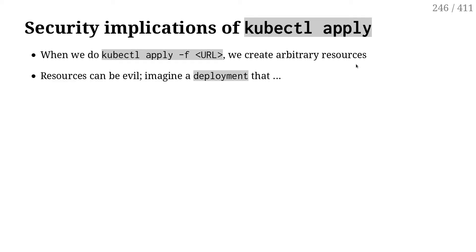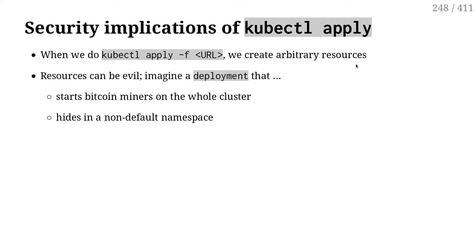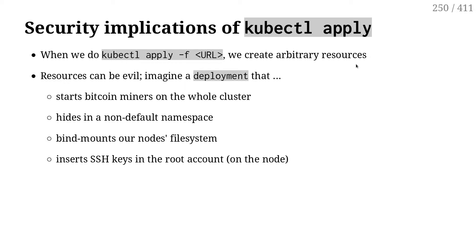So there is a high possibility of danger. When we do kubectl apply, we might end up creating a deployment that would start mining cryptocurrencies on the cluster — that could hide in a different namespace, so that when I do kubectl get, I'm not seeing it by default. It could bind mount the file system of the nodes, accessing the file system of the machines. It could add rogue SSH keys in the root account, allowing an external attacker to log in as root on the cluster. It could even encrypt the data and ransom it — so all kinds of really bad things.